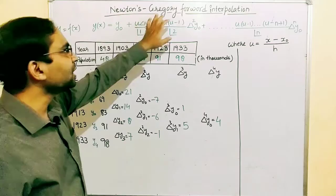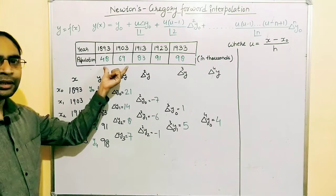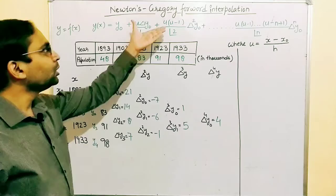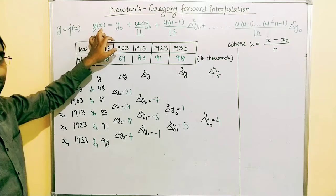To compute interpolation we have many methods. Today we will talk about Newton's Gregory Forward Interpolation Formula. This formula is well suited if we want to find out some intermediate value that is somewhere in the beginning of the table, such as 1896, 1890, or 1900. For values near the beginning, we use Newton's Gregory Forward Interpolation Formula.